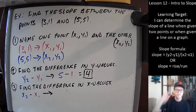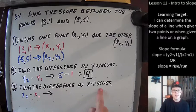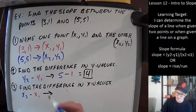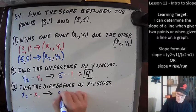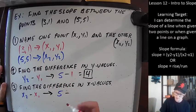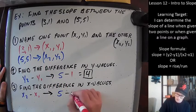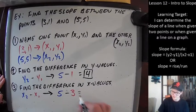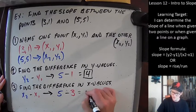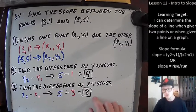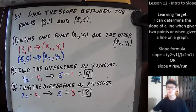Step three shouldn't be a surprise: we're going to find the difference in the x values. That's going to be x₂ minus x₁. x₂ is five and we subtract x₁ which is three — five minus three gives us two. The difference in the x values is two. Just like the y value, that's not our slope yet, but we'll use it soon.